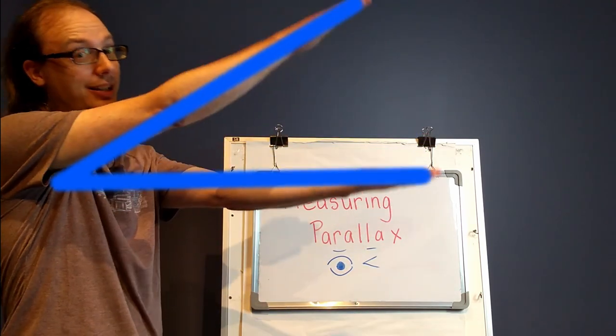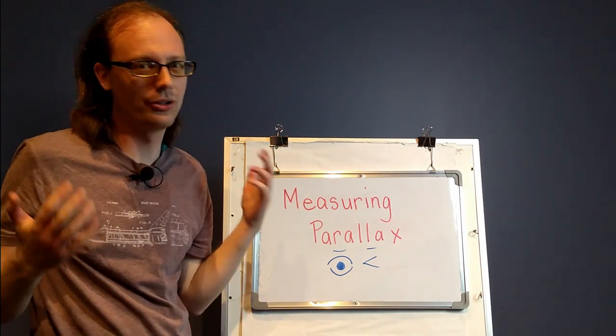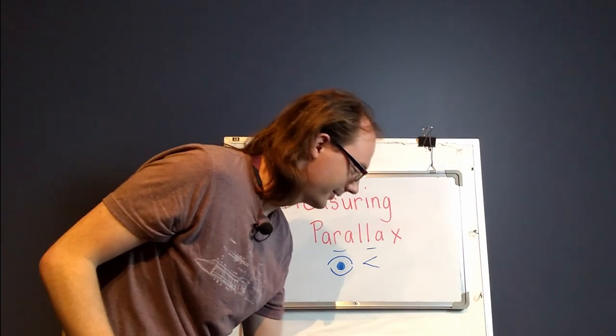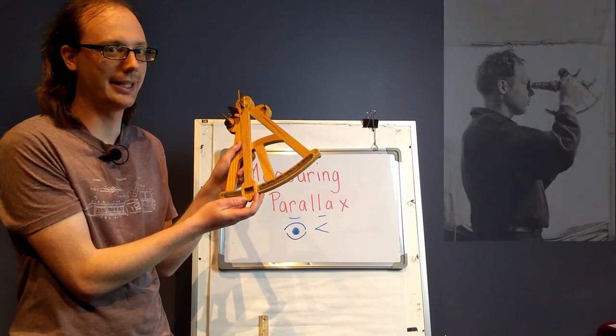This distance is actually an angle in degrees. So we'll need some sort of angle measuring device like a sextant. This measures angles and sailors used it to navigate the sea.